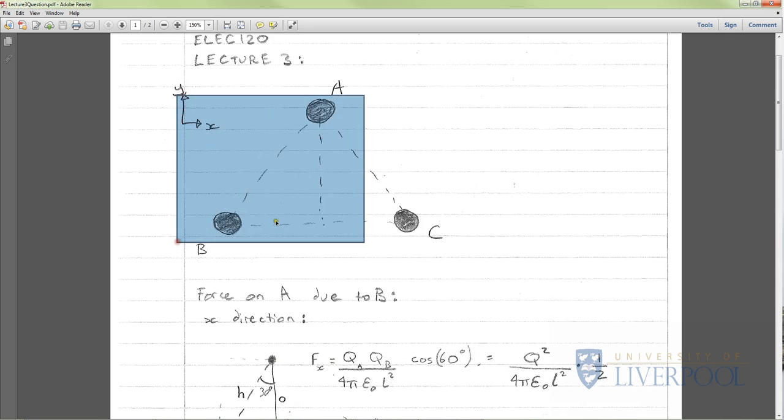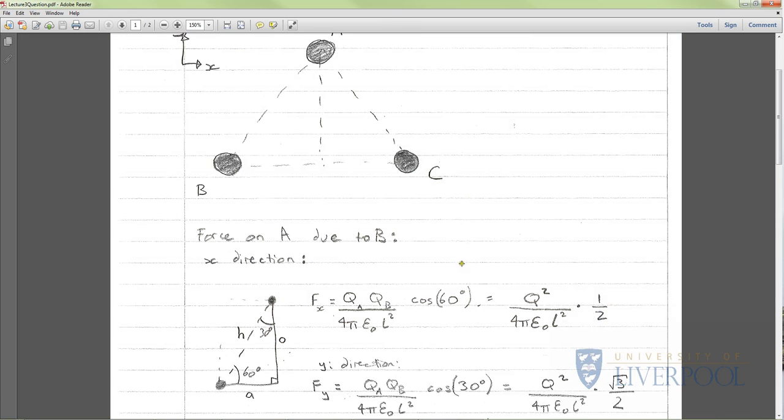First up we're going to find the force on A due to B. We can see that if it was just A and B they'd be acting on each other in a straight line in this direction. We're just looking at the force on A due to B, then we're going to find the x direction and then the y direction using our standard Cartesian coordinate system. The force on a charge is Coulomb's law. We've got QA and QB, but we know they're the same magnitude so those can be simplified. The distance between them is L squared.